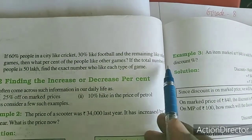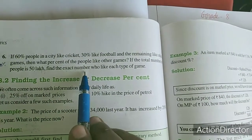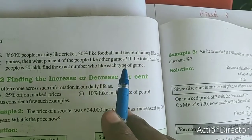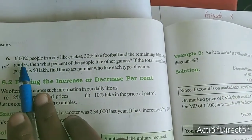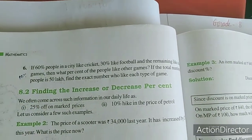If the total number of people is 50 lakh, find the exact number who like each type of game: 60%, 30%, 10%. Now we will find out.